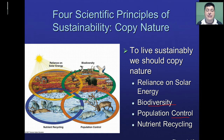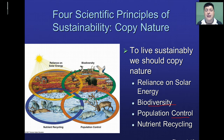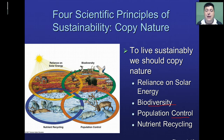And lastly, nutrient recycling. In nature, nothing is wasted — everything goes back to nature. The law of conservation of matter says that matter can't be created or destroyed, so nature relies on that principle so that each piece of matter can be recycled. The atoms that make up our bodies have been recycled for thousands and thousands of years. So when we're producing goods and making waste, we need to consider how we can recycle that and make sure we're mimicking nature.